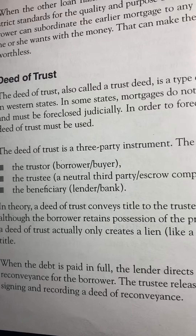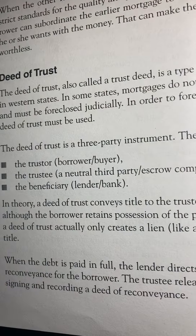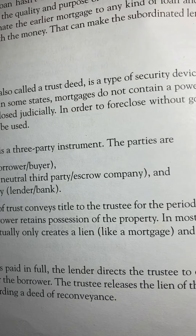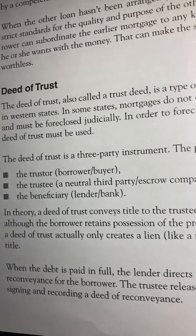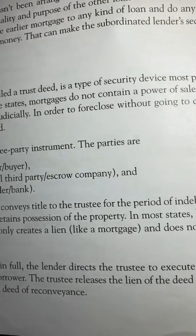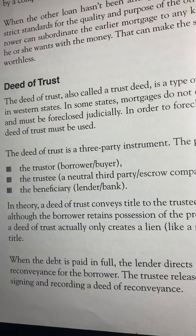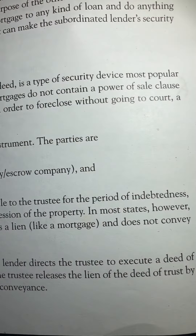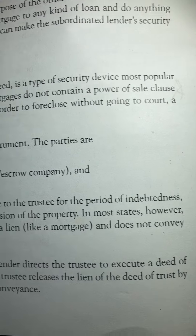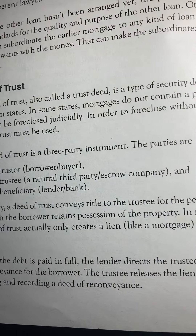Although the borrower retains possession of the property, in most states a deed of trust actually only creates a lien — similar to a mortgage — and does not convey title. When the debt is paid in full, the lender directs the trustee to execute a deed of reconveyance for the borrower. The trustee releases the lien of the deed of trust by signing and recording a deed of reconveyance.